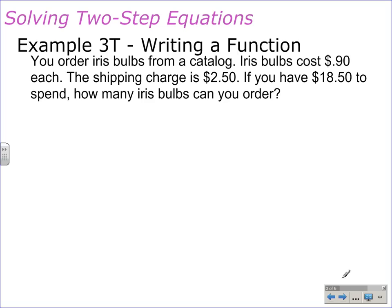Example 3T, writing a function. You order iris bulbs from a catalog. Iris bulbs cost $0.90 each. The shipping charge is $2.50. If you have $18.50 to spend, how many iris bulbs can you order? All kinds of good information in this problem. I want to start with a question. How many iris bulbs can you order? We need to define a variable here, and some teachers like to call this a let statement because it starts with let. In this case, I'm going to choose B for my variable. B equals the number of bulbs ordered.